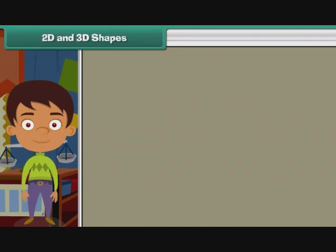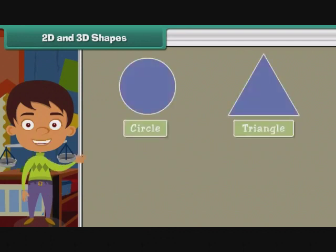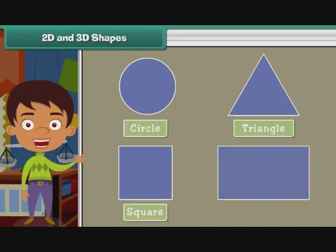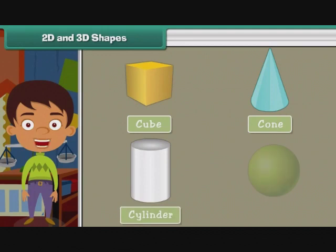Now let us talk about two-dimensional or 2D shapes. Some 2D shapes are circle, triangle, square, and rectangle. Some three-dimensional or 3D shapes are cube, cone, cylinder, and sphere.